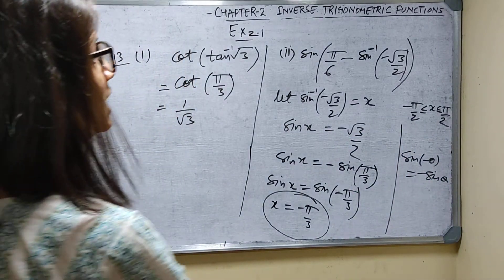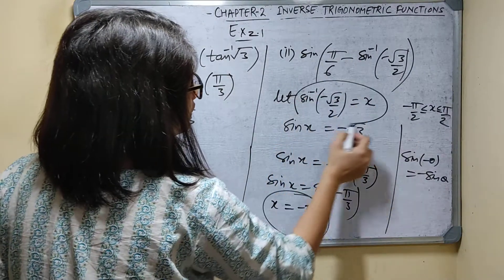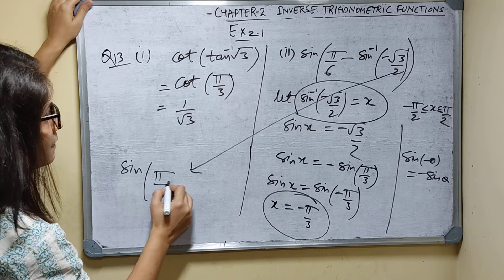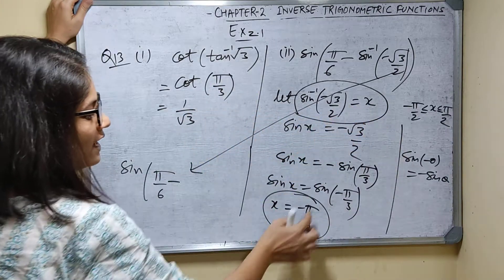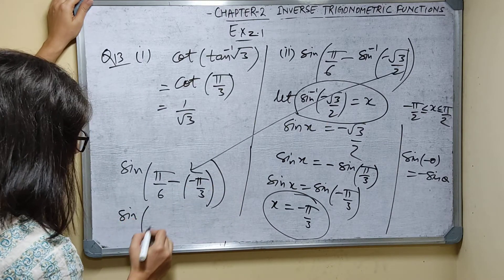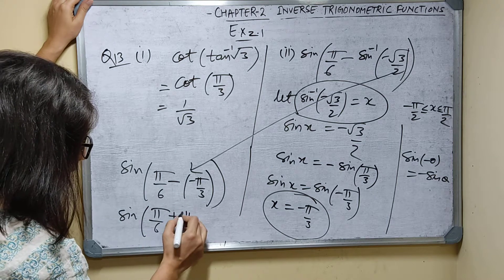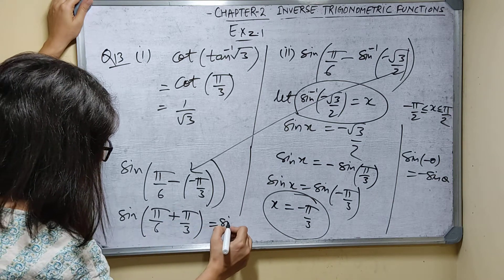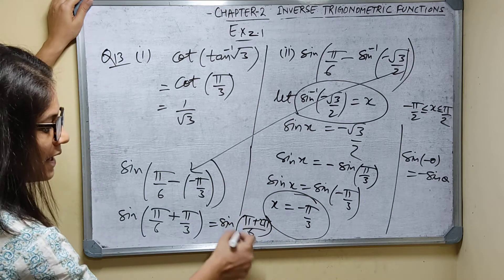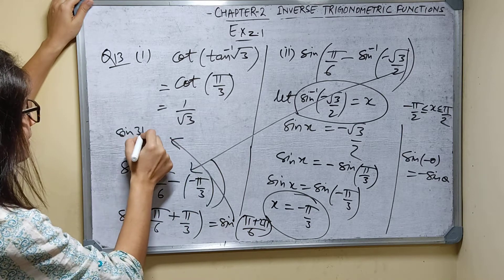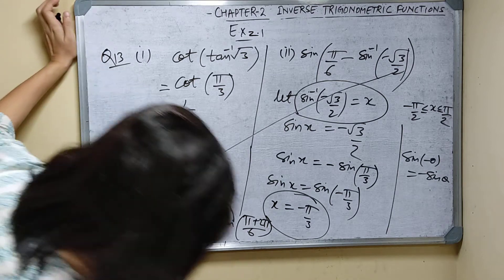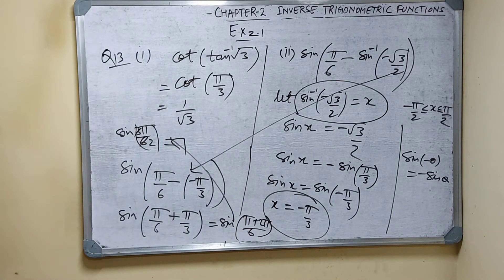So sin inverse of minus root 3 by 2 equals minus pi by 3. Substituting back: sine of (pi by 6 minus (minus pi by 3)) = sine of (pi by 6 plus pi by 3). The LCM of 6 and 3 is 6, so this is sine of (pi plus 2 pi) by 6 = sine of 3 pi by 6 = sine of pi by 2 = 1. The answer is 1.